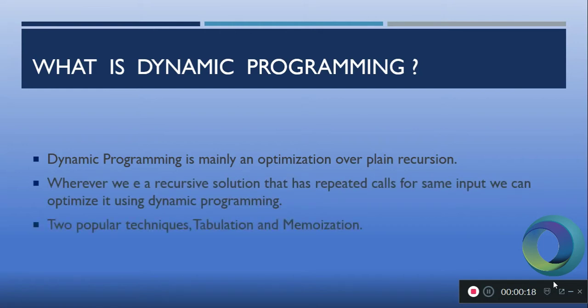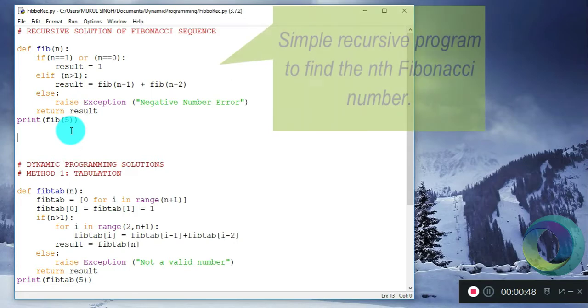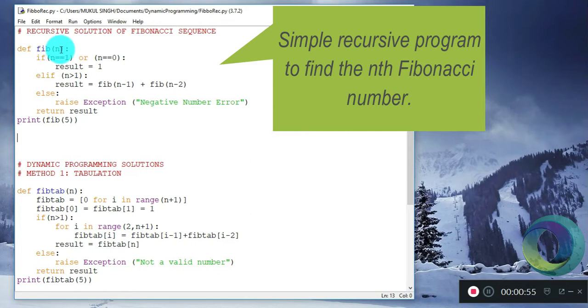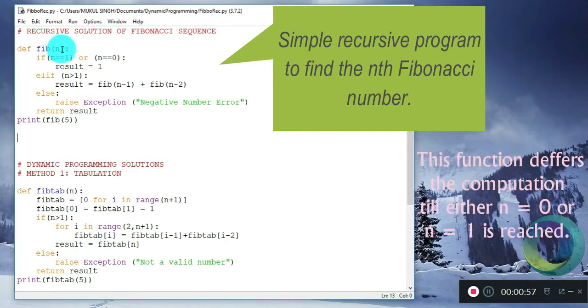Let's dive into it with an example. Consider this function which computes the nth Fibonacci number. As you can see, it takes only one parameter n.